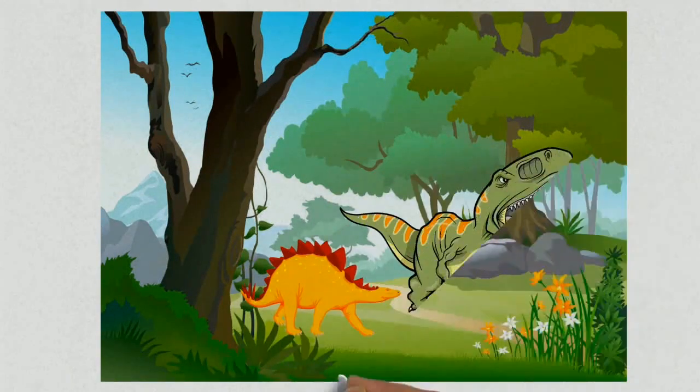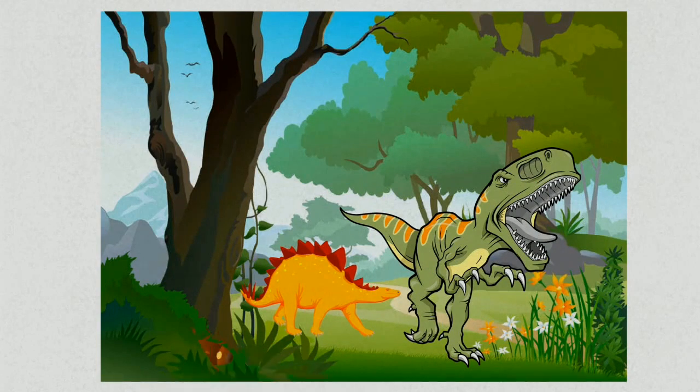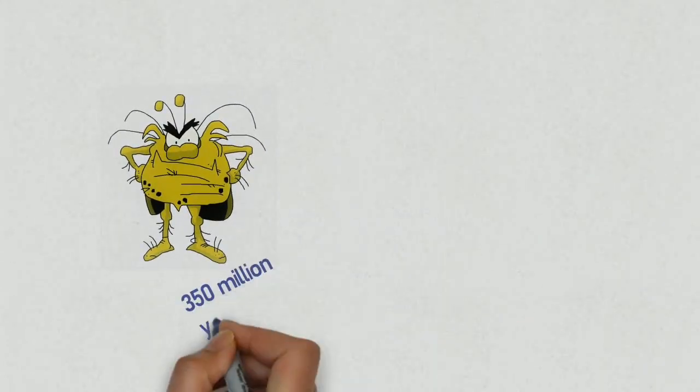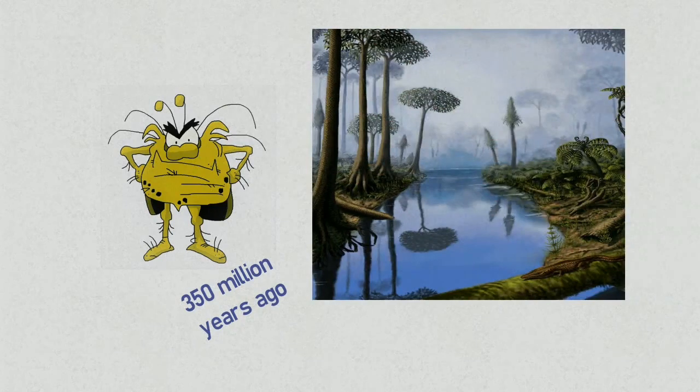If you could travel back to the Jurassic period and walk among the dinosaurs, you would easily recognize the cockroaches crawling under logs. Primitive roaches appeared even earlier, about 350 million years ago, during the Carboniferous period.